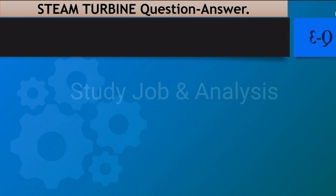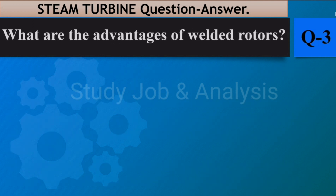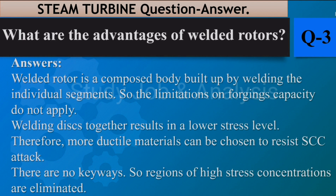Question number three: What are the advantages of welded rotors? Answer: A welded rotor is a composite body built up by welding individual segments, so limitations on forging capacity do not apply. Welding discs together results in a lower stress level, therefore more ductile materials can be chosen to resist SCC (stress corrosion cracking) attack. There are no keyways, so regions of high stress concentration are eliminated.